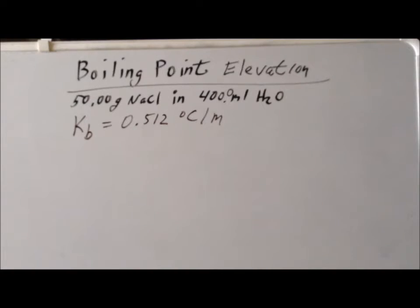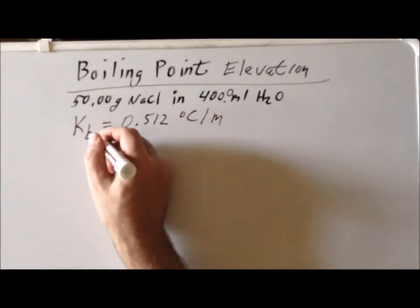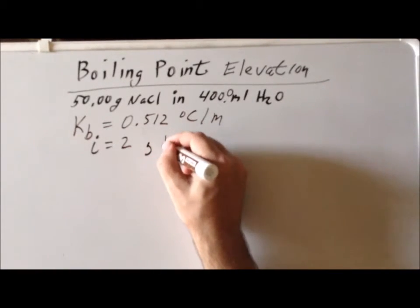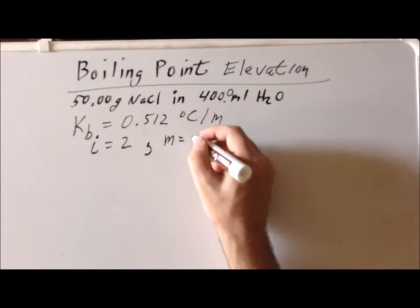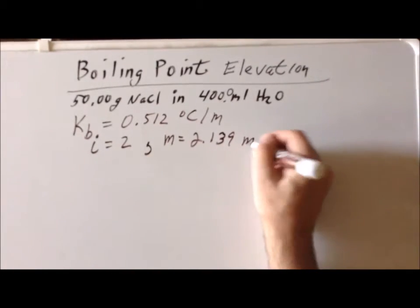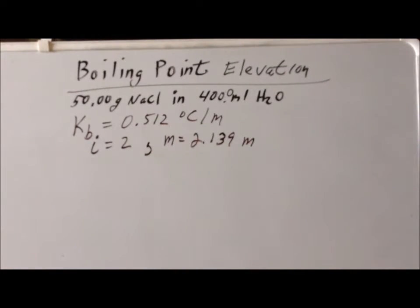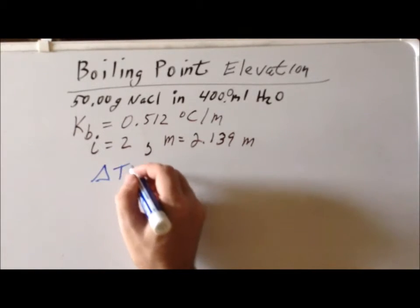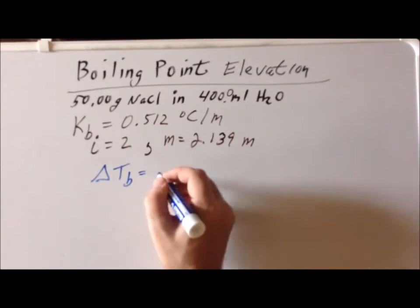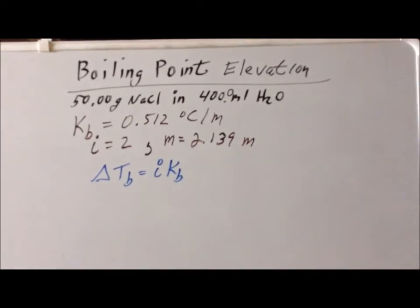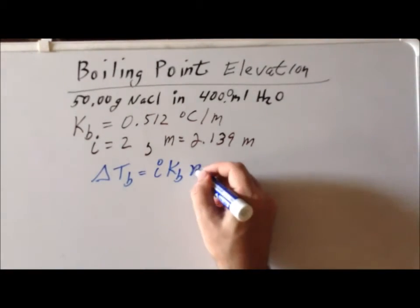We already noticed that i is equal to 2 in our particular case, and we've also determined that the molality of the solution is 2.139 molal. Therefore, we'll remind ourselves one last time of the relevant formula: the change in the boiling point is equal to i times Kb, the ebuloscopic constant, times m, the molality.